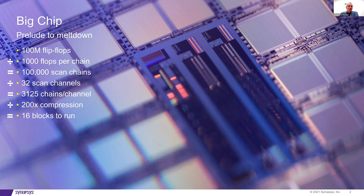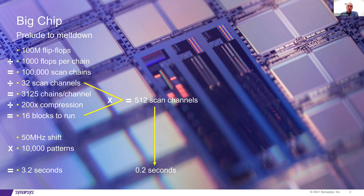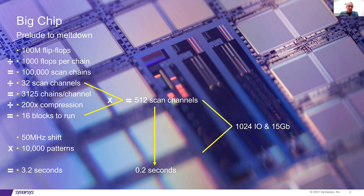You'd run those 16 blocks serially if you only had 32 scan-in and 32 scan-out. Or if you have more scan channels, like 512, you can run them all at the same time. At a 50 MHz shift rate with 10,000 patterns per block, you're looking at anywhere between 3.2 seconds and 0.2 seconds depending on how many scan channels you have. But going for 512 scan channels means really 1,024 IOs being contacted at test — not including power or clocks. That's not going to happen. And 15 gigabits of data is a lot to ask.